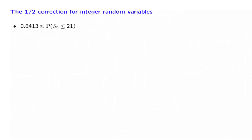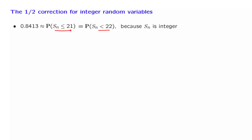Recall that we approximated this probability using the central limit theorem. We observe that the probability that Sn is less than or equal to 21 equals the probability that Sn is strictly less than 22. Why? Because Sn is an integer random variable, so being strictly less than 22 is identical to being 21 or less. Therefore these two events are the same and their probabilities are equal.